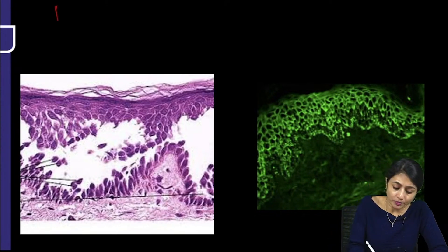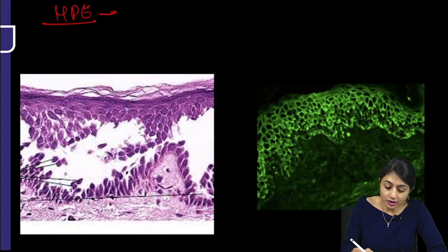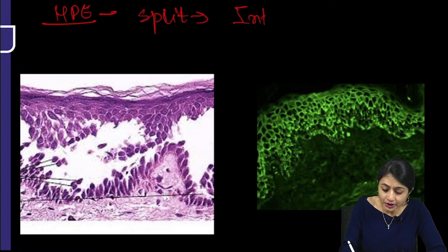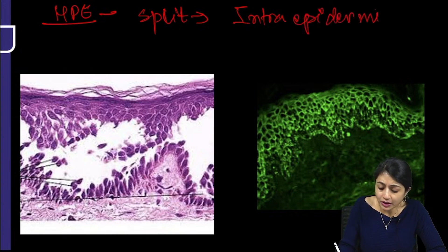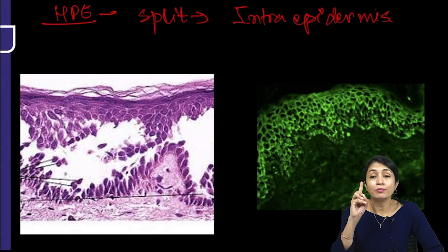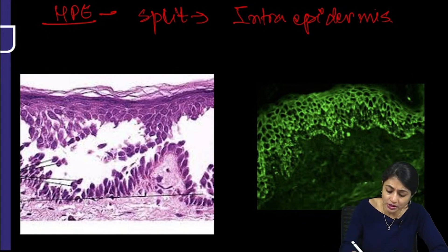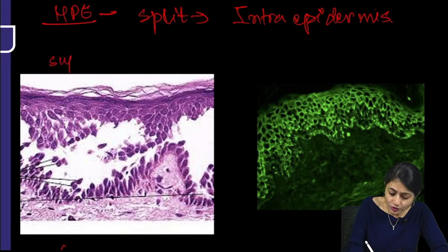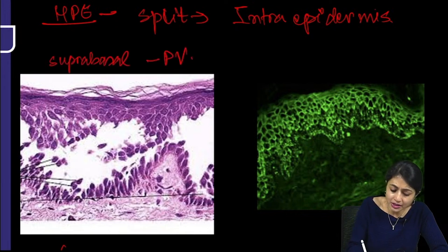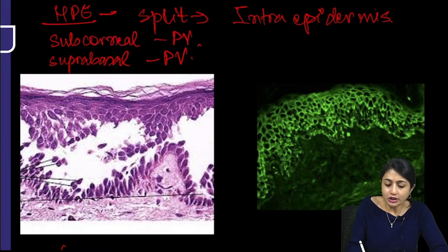They may give you a histopathology image where you see a split in the skin which is intra-epidermal. On biopsy it may be difficult to differentiate between pemphigus vulgaris and foliaceous, but you can still differentiate. If you see a suprabasal split, it is pemphigus vulgaris. If you see a sub-corneal split, it is pemphigus foliaceous.